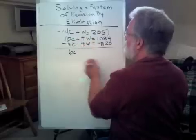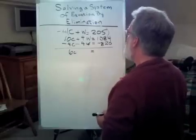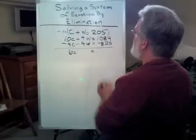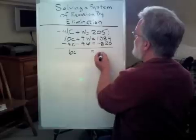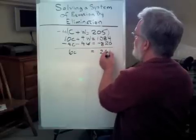4W minus 4W is zero. And 1084 minus 820 would be 264.